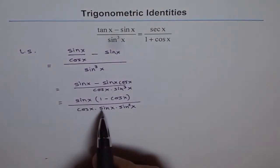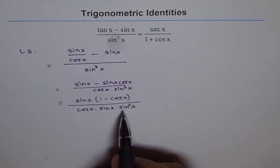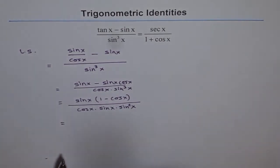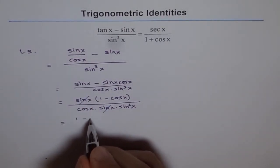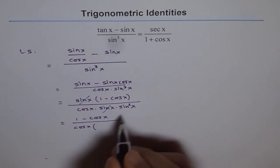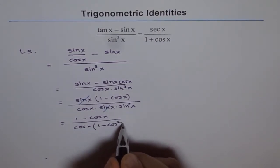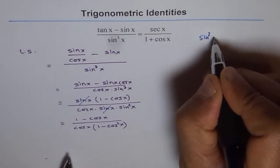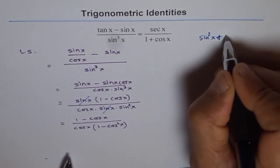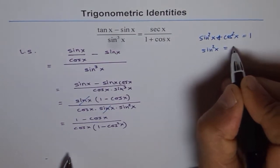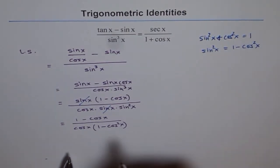After cancelling sin x, we write sin square x as 1 minus cos square x, using the Pythagorean identity: sin square x plus cos square x equals 1. So we have 1 minus cos x in the numerator, divided by cos x times (1 minus cos square x) in the denominator.